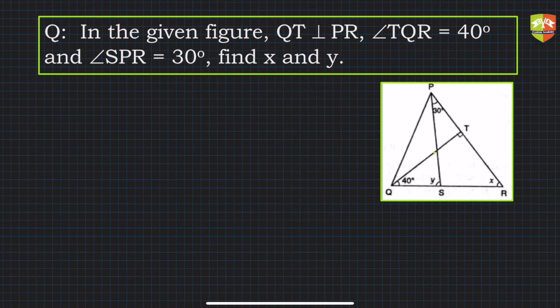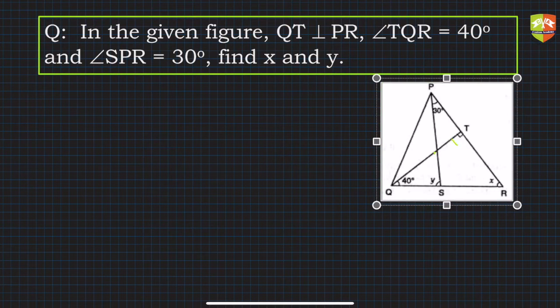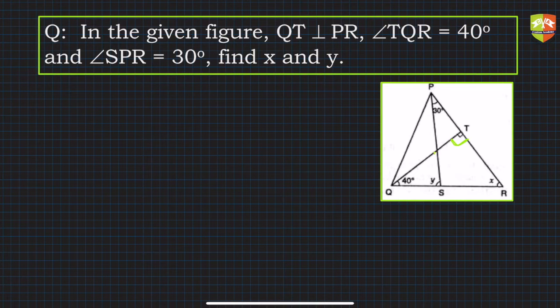Hello and welcome to problem solving session on triangles. The question says in the given figure, QT is perpendicular to PR. So let's understand the figure first. It's given that QT is perpendicular to PR.